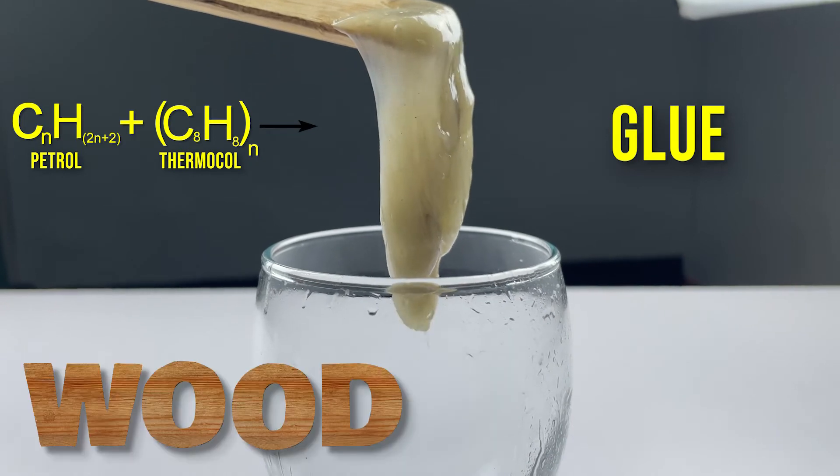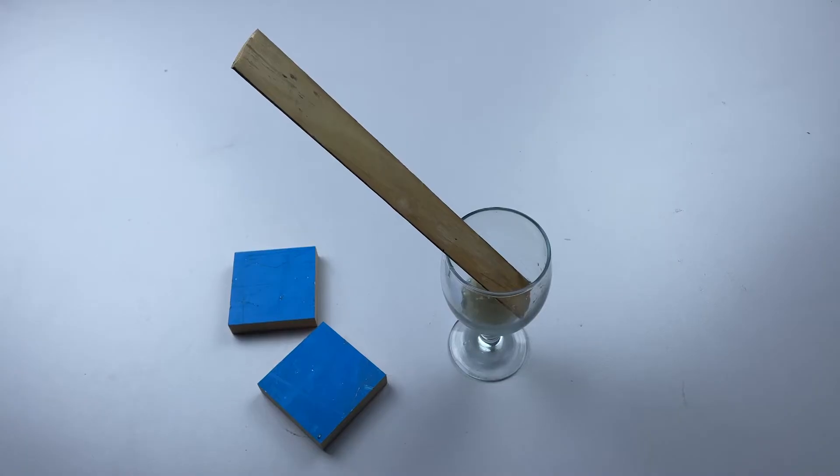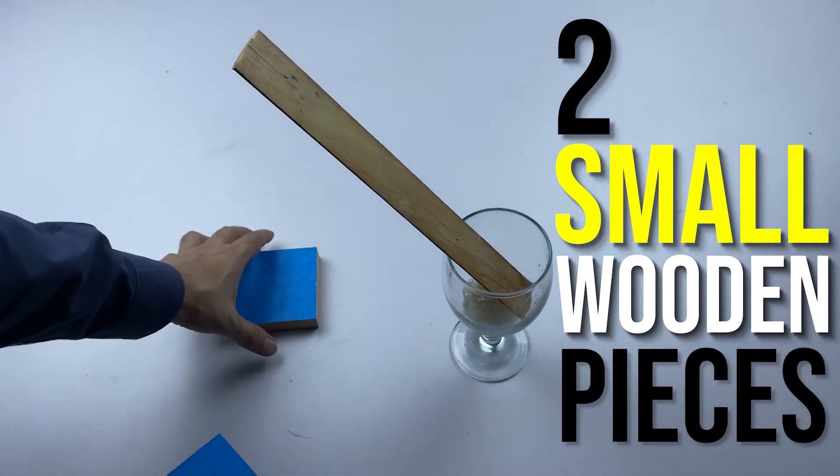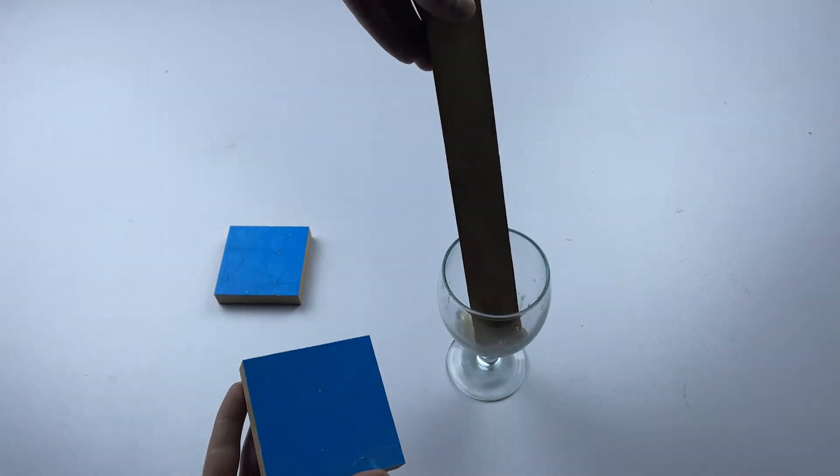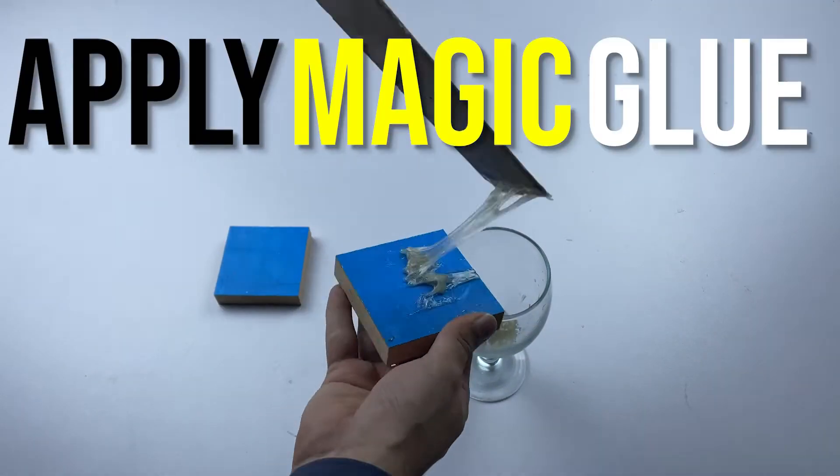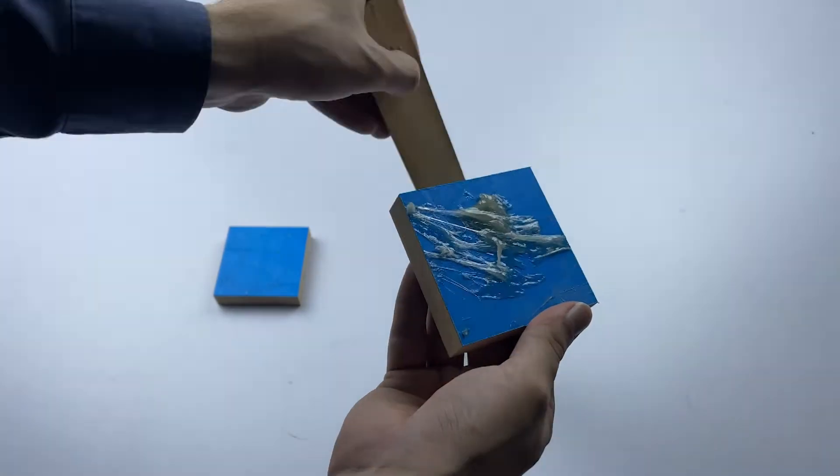It can be used to attach wood and plastic and also different objects. To test, take two small wooden pieces. Apply magic glue on one side of the wooden piece and attach another piece to it.